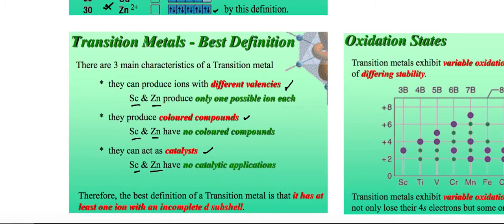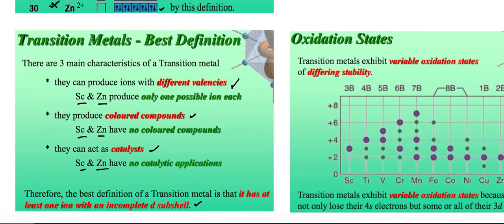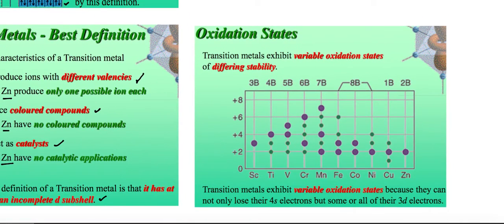The best definition — and the one you must remember for exams — is: a transition metal is an element that has at least one ion with an incomplete D subshell. If asked to define transition metal in an exam, this is your answer. The next video covers oxidation states, where you will learn to calculate oxidation numbers for transition metals. Please go ahead and try some questions.